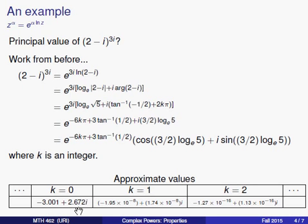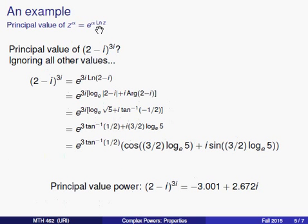Now, alternatively, if we knew from the outset that all we wanted was the principal value, we could just go through using the definition. The principal value, we would start with the principal value of the logarithm, which, again, involves the principal value of the argument. And there's only one answer for that. And so there will be only one output for this principal value. And we get the same number we saw on the previous slide.